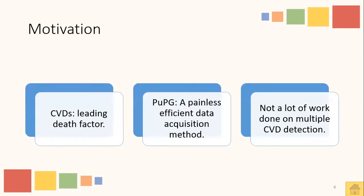The main motivation behind this research study is that cardiovascular diseases are a leading death factor. In the year 2019, around 35% of global deaths were caused by cardiovascular diseases. An estimated 17.9 million deaths were accounted for each year due to cardiovascular diseases, and 85% of them are due to heart attacks and strokes. Secondly, pulse plethysmography signals are selected for detection of cardiovascular diseases because it is a painless and efficient data acquisition method. Lastly, in recent years, only a few research studies have used pulse plethysmograph signals for the detection of cardiovascular disease.